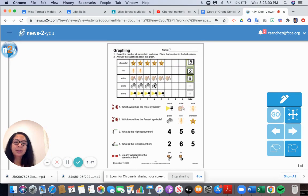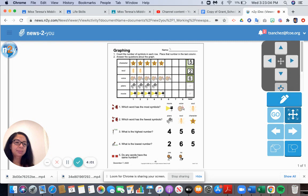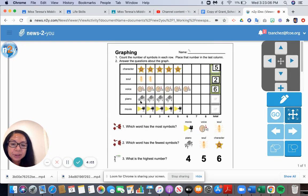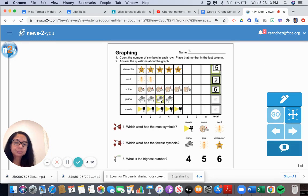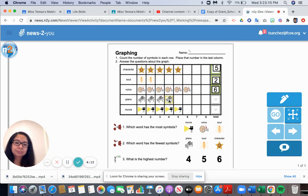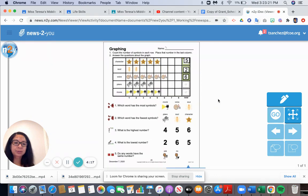And now pianos. Let's look at the pianos and count them. Let me zoom in a little. It's hard to see the pictures. One, two, three, four. There are four pianos. So let's put the number four in this box.